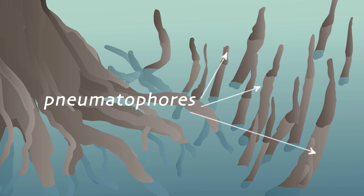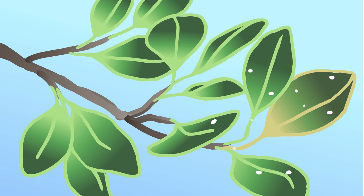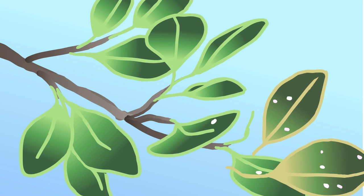Their aerial roots keep the trees anchored and take in air above the surface when tides are high. Mangroves deal with salinity by either blocking salt from entering their roots or by forcing out unwanted salt through their leaves.